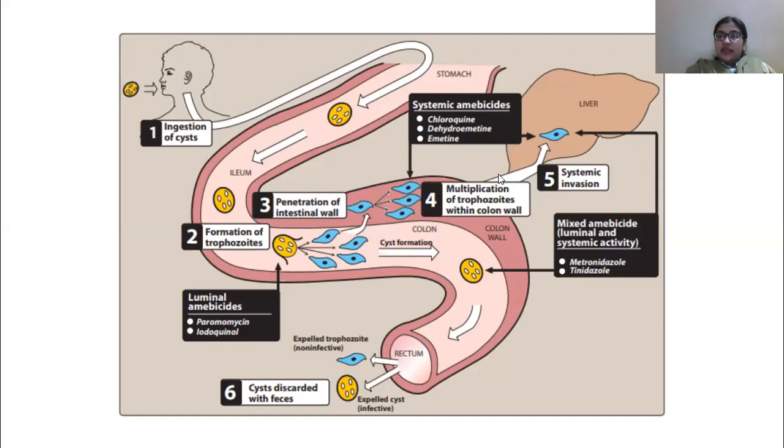Let's just say trophozooid manages to enter into the blood, and through the blood then it can infect other organs of the body such as brain, liver, and lungs. We don't want the liver to have abscess, we don't want brain to have abscess, we don't want lungs to have abscess.